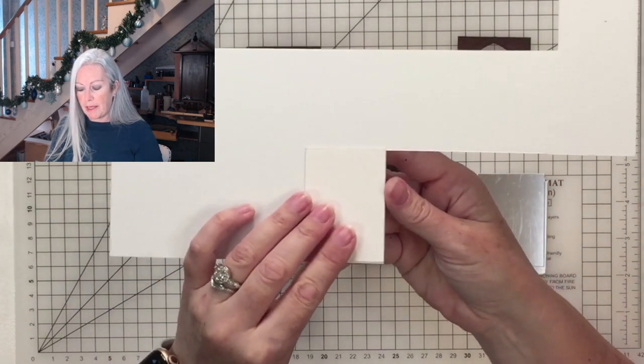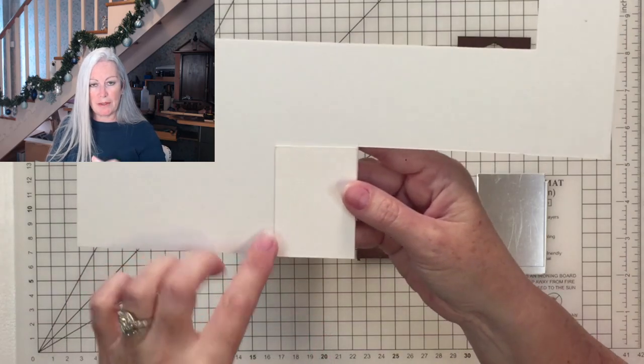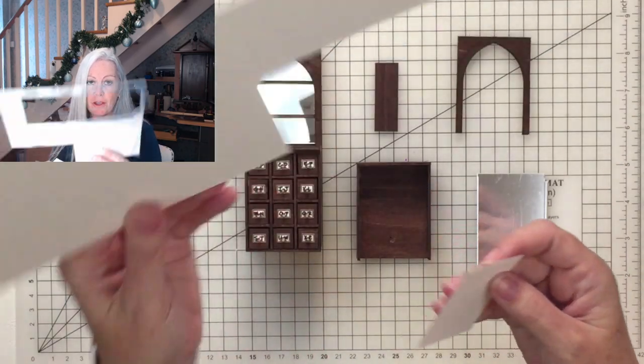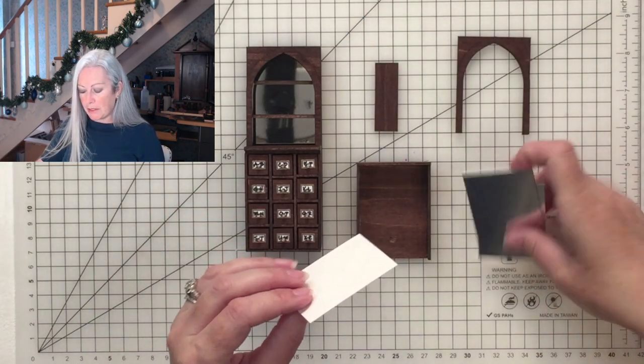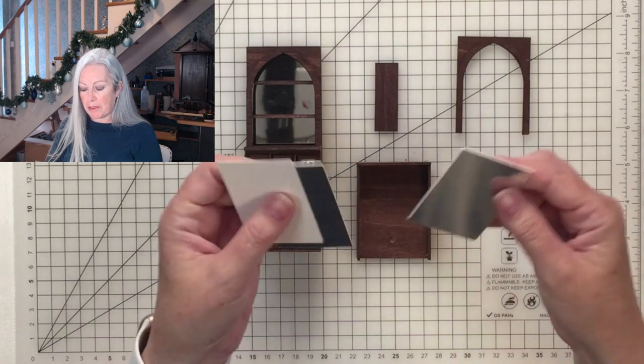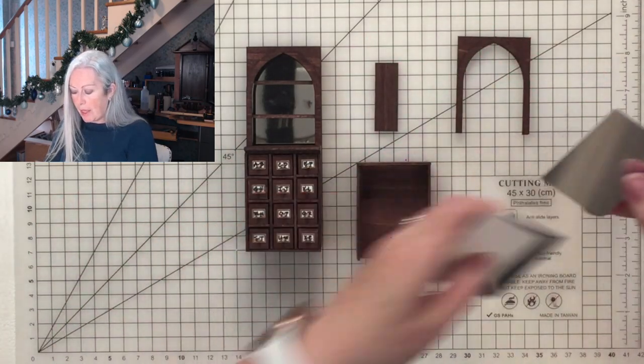I turn it over and you can see how I've cut that. I draw around it with a pencil and then cut it with an exacto knife. You could do it on your Cricut if you wanted to. I've cut several pieces of mirror because I'm going to have three top sections there.